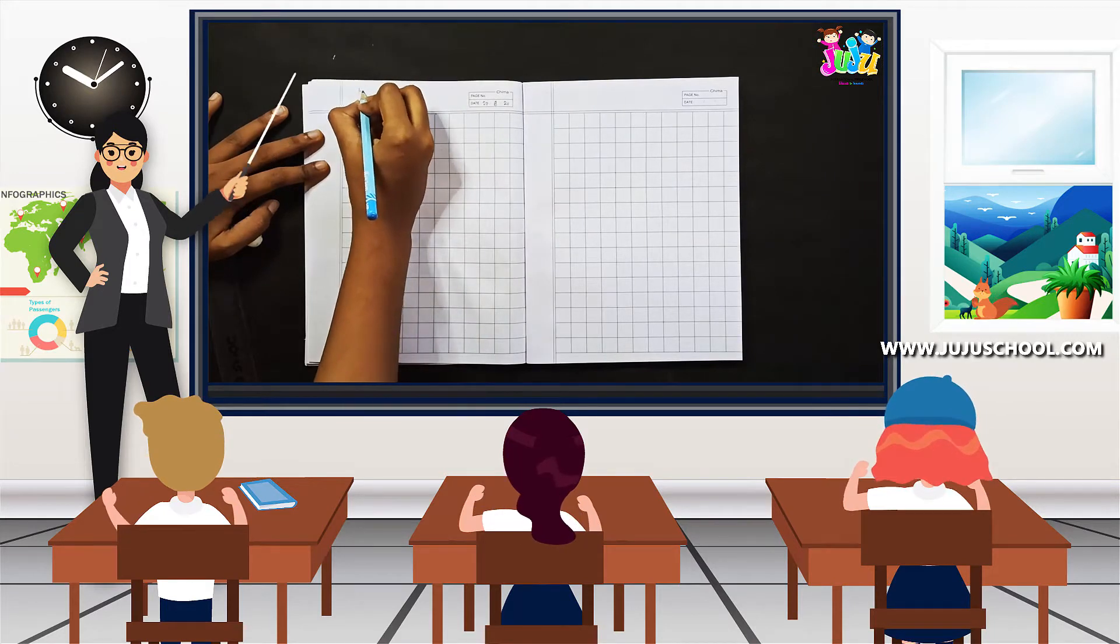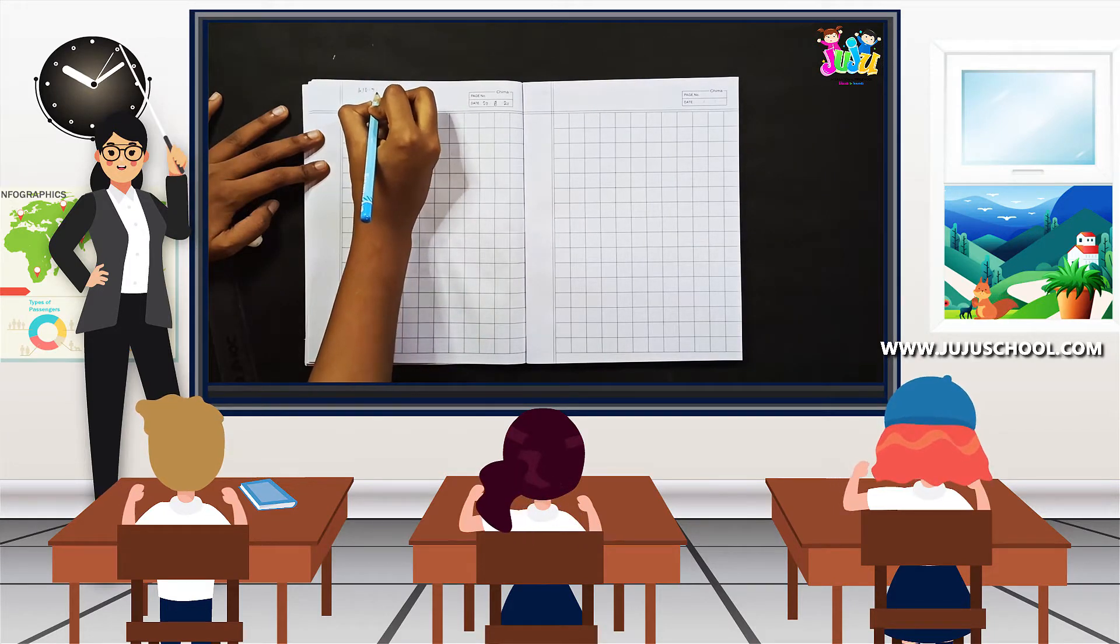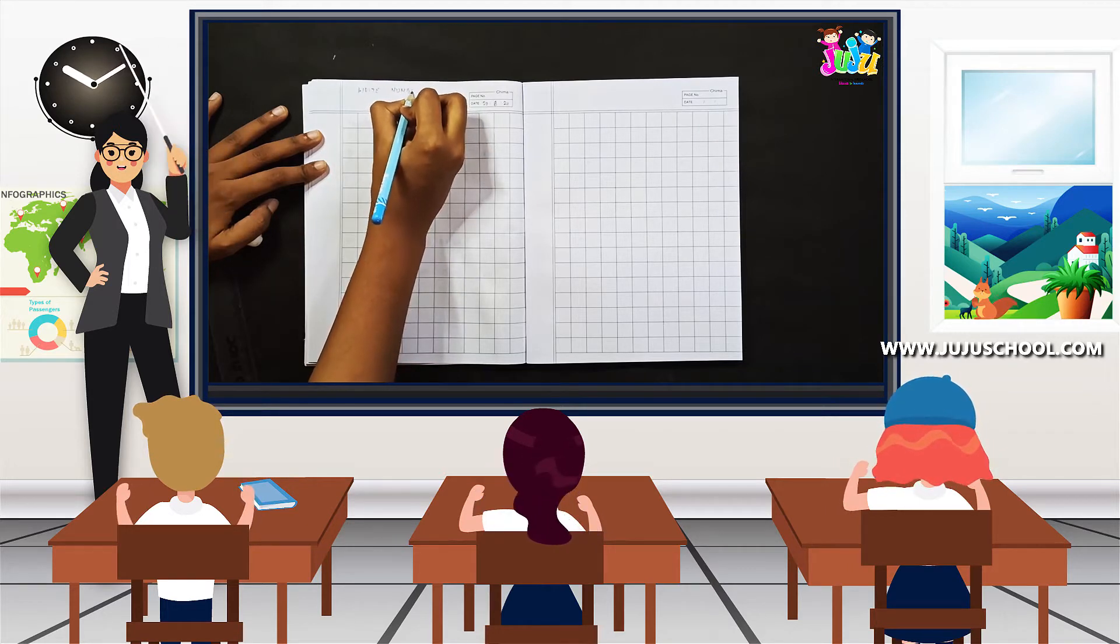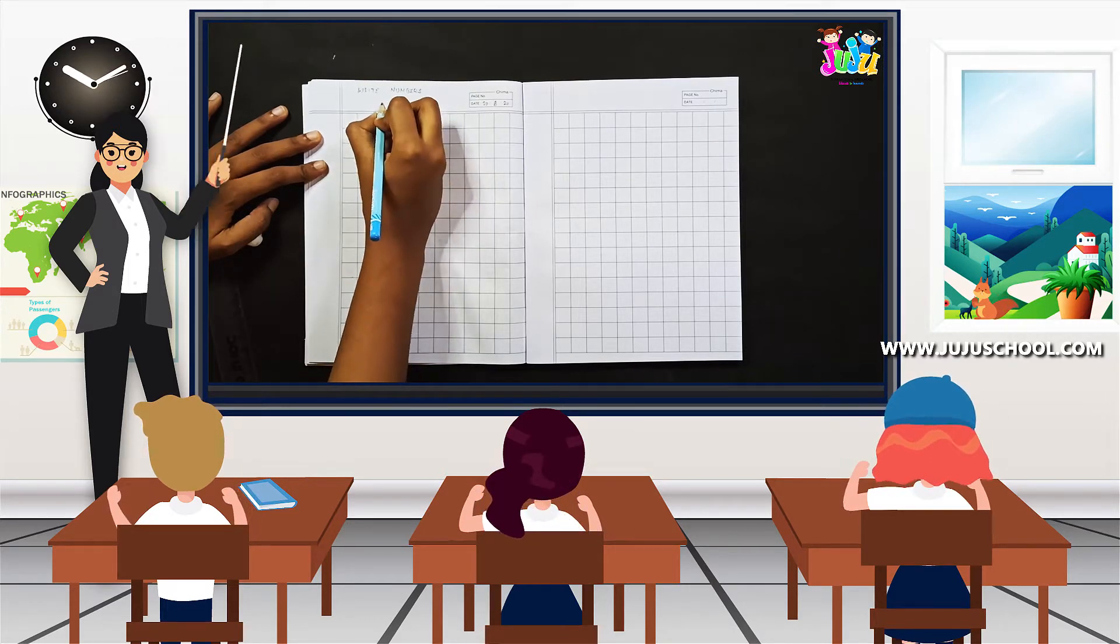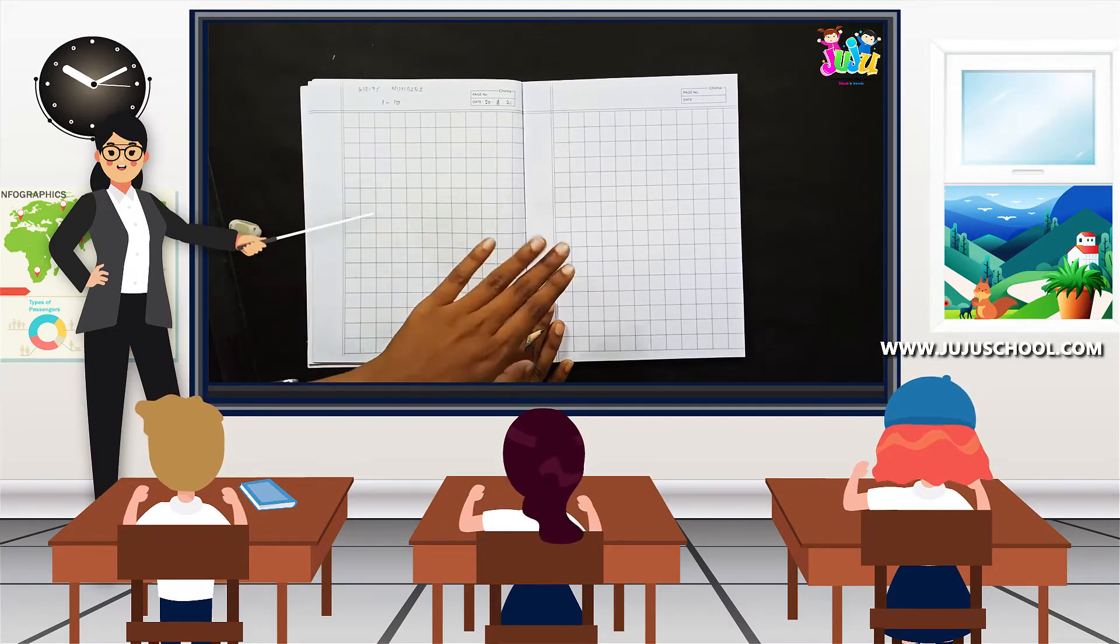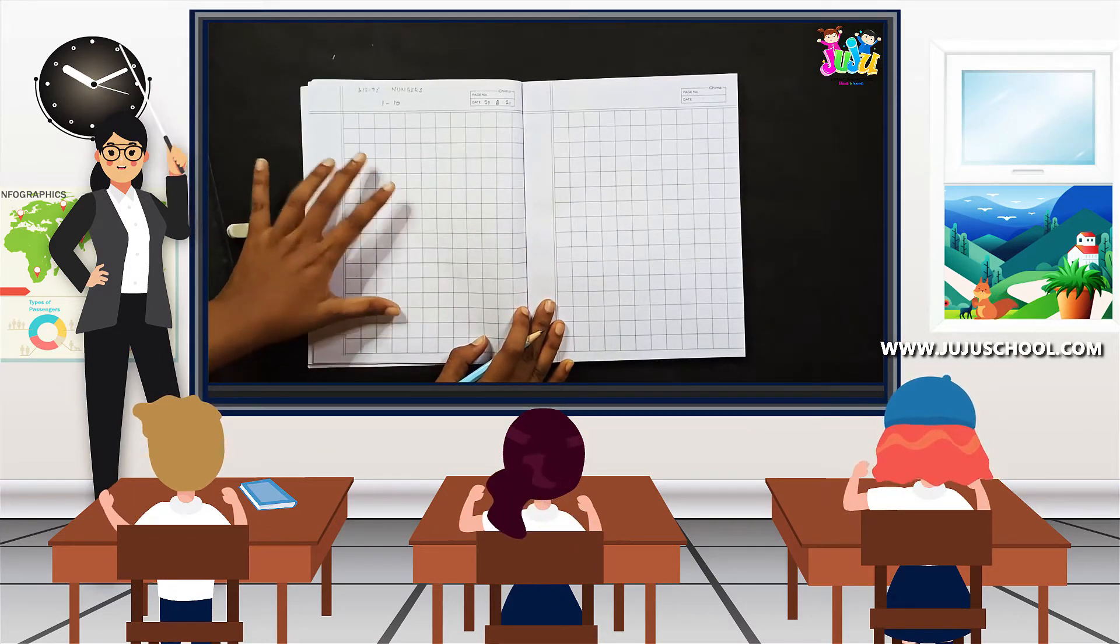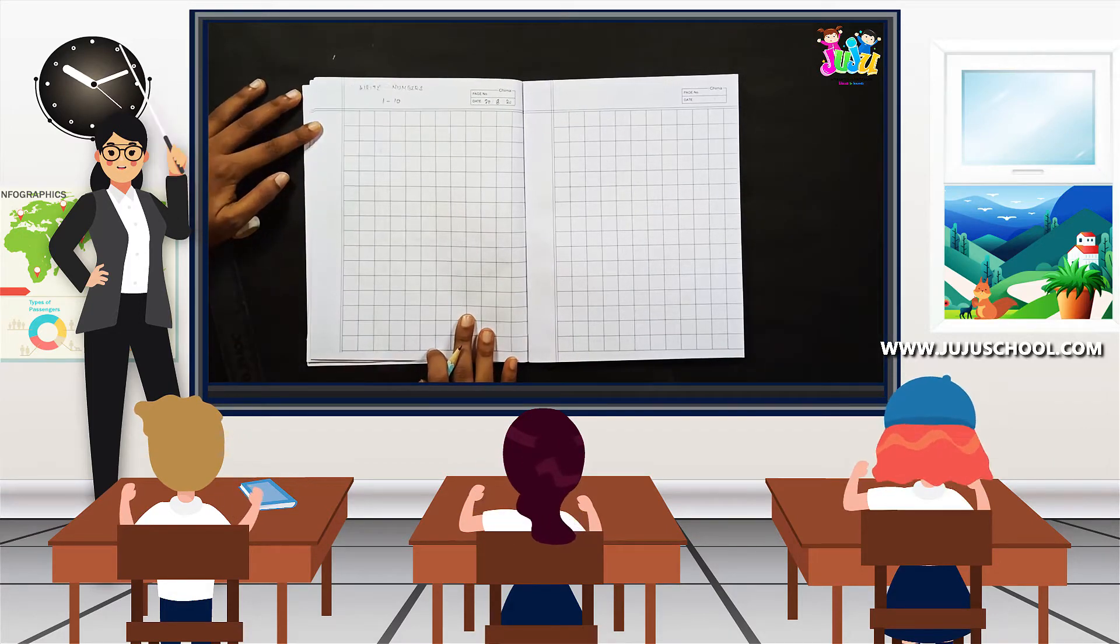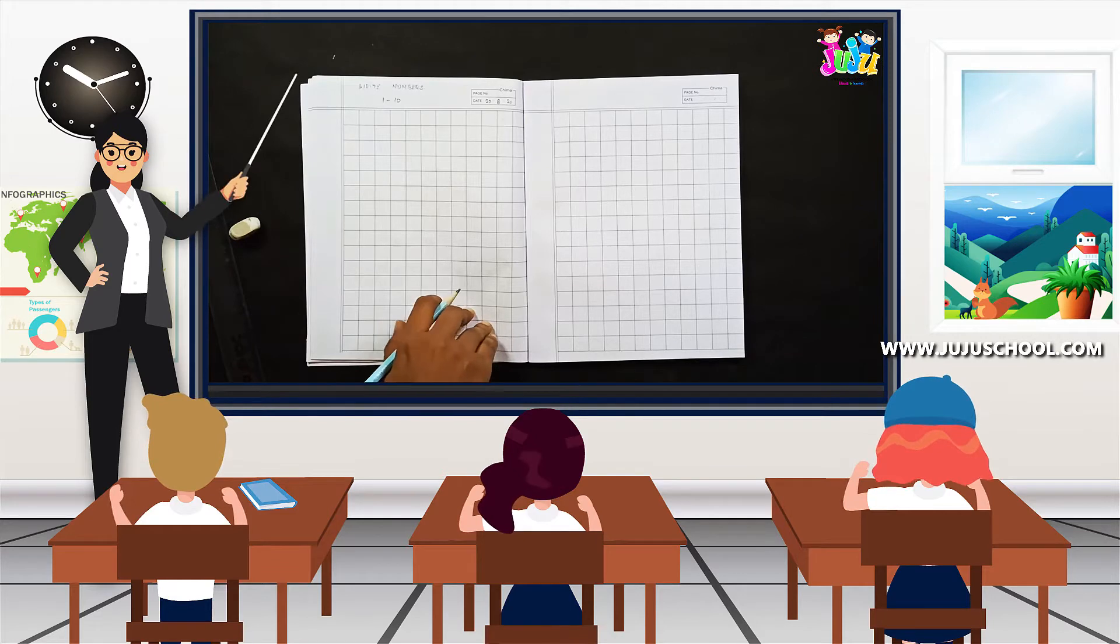So the heading will be write numbers 1 to 10. So today we are going to write from 1 to 30 and in this page we are going to write from 1 to 10. Let's get started. Listen carefully and see carefully and then you are going to write it.